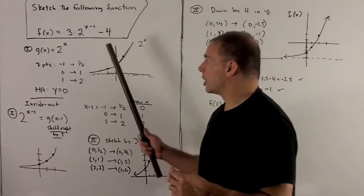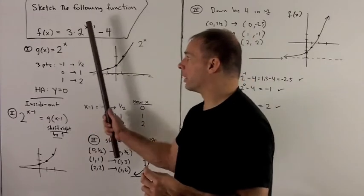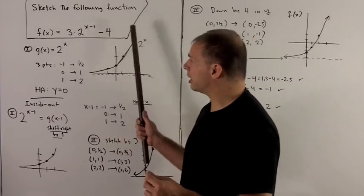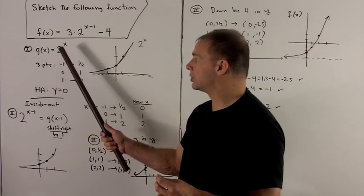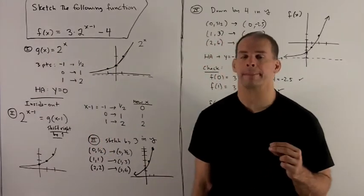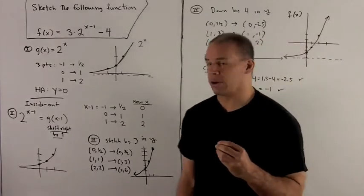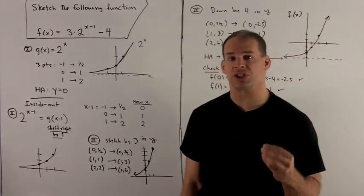So let's take a look. If I strip away all the operations that are happening here, we're going to be left with the function g of x equal to 2 raised to the x power. So I want to know how to graph this first, and then the rest is just shifting and stretching.